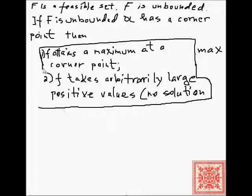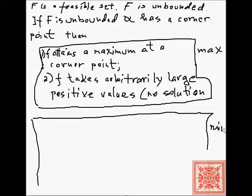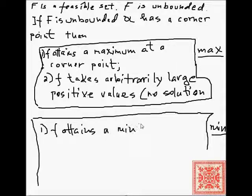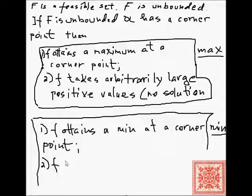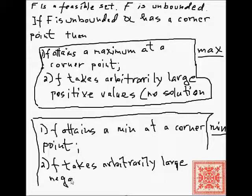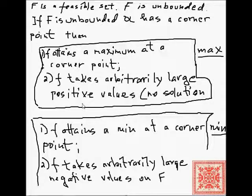We also have the minimization problem. In the case of minimization, there are two mutually exclusive cases. In the first case, f attains a minimum at a corner point of the feasible set. In the second case, f will take arbitrarily large negative values, in which case we have no solution. A function that takes arbitrarily large negative values cannot be minimized, because for any value chosen there will be another even more negative value on the feasible set F.